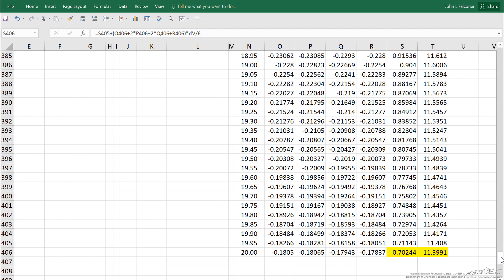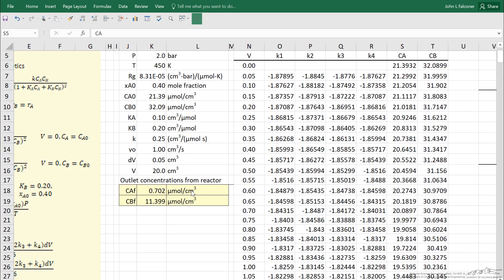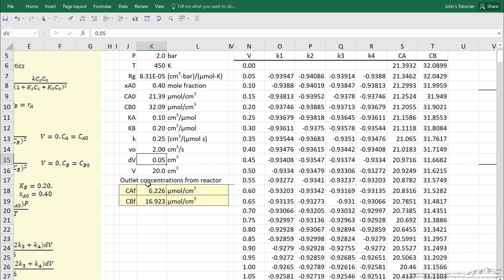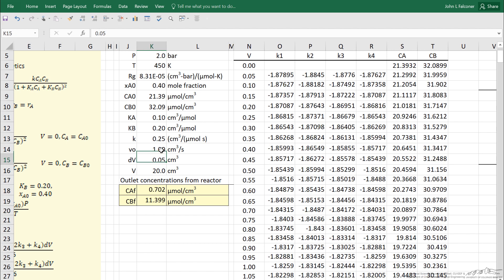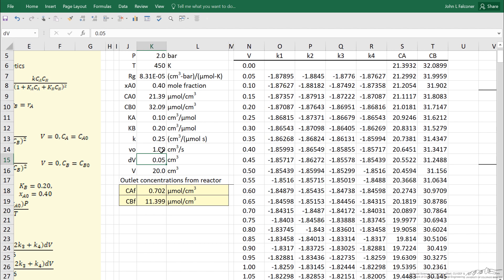Those are the values I'm interested in. Those would be the exit concentrations from the plug flow reactor. Well, in the spreadsheet, they're also calculated here. Now, of course, I can change the flow rate and it gives me new values, solves the differential equation. Let's go back to our original value. Or I could create a data table—and data tables are described elsewhere—to calculate these exit concentrations for a bunch of flow rates. But the idea is using Excel, we can relatively easily solve these ordinary differential equations for a plug flow reactor.